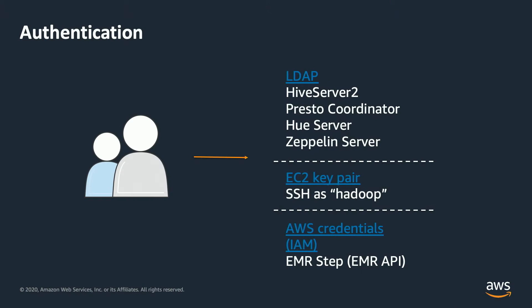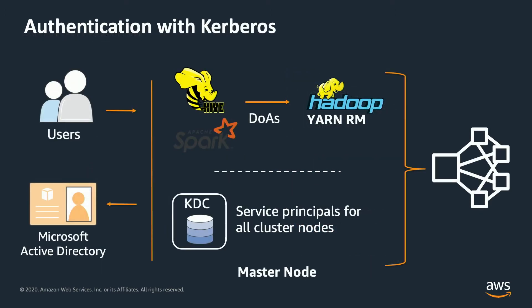This allows them to log in directly to the cluster and submit jobs and run their applications directly from the command line. Another option for authentication comes down to AWS credentials or IAM. One of the options is to restrict or allow authentication through the means of submitting a job through the EMR step API.